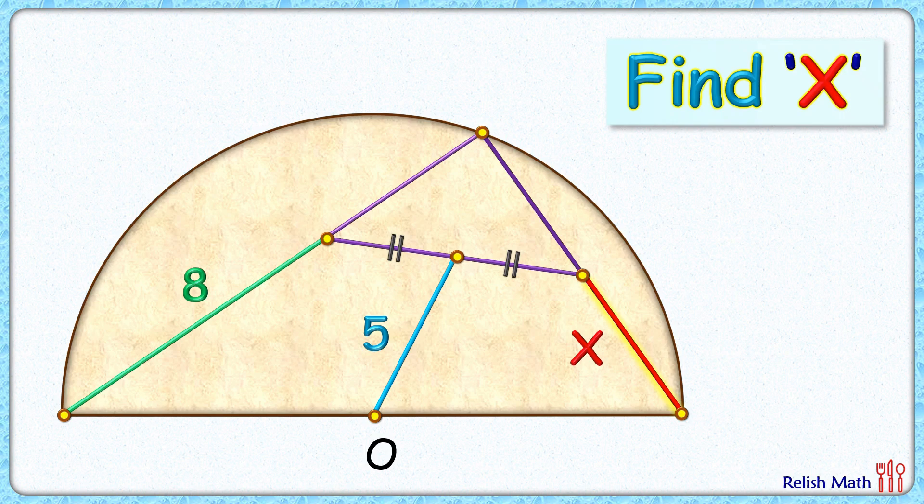Welcome everyone. This amazing question given to us is a semicircle with center O. Few line segments are drawn inside the semicircle as shown in the figure. This point is the midpoint of this purple line segment. The length of green and blue line segments are given as 8 and 5 centimeters. The exciting part is, with this limited data, we have to find the length of this red line segment or value of x.